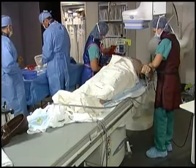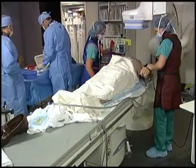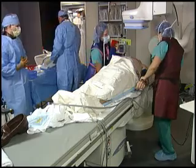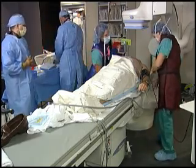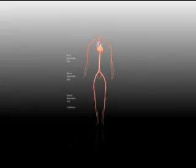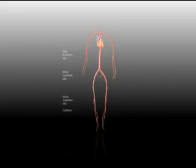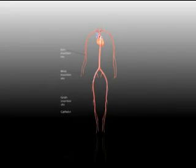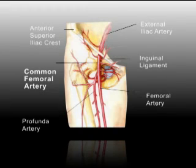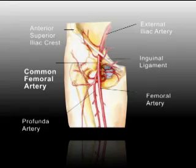The emergency angioplasty is performed using sterile technique. The entire team wears sterile surgical attire. Access to the circulation can be obtained from several sites, the most common being the right femoral artery, which is located in the right groin. To prepare the site, the hair on the groin is shaved with an electric razor and the skin is cleansed with an antiseptic solution.